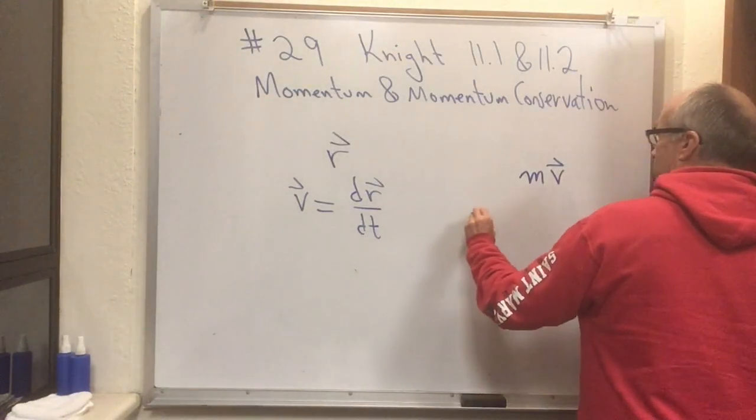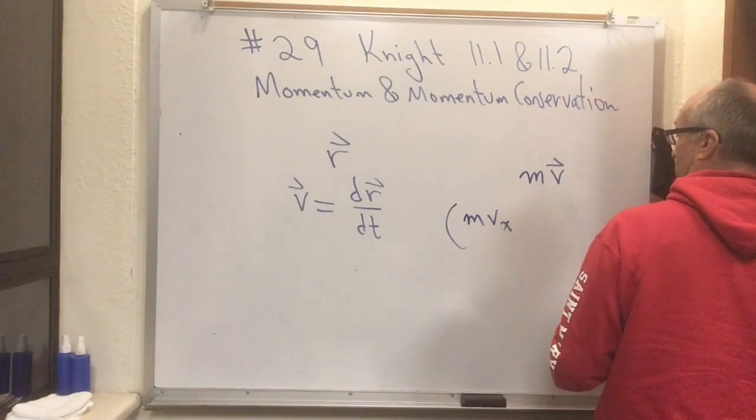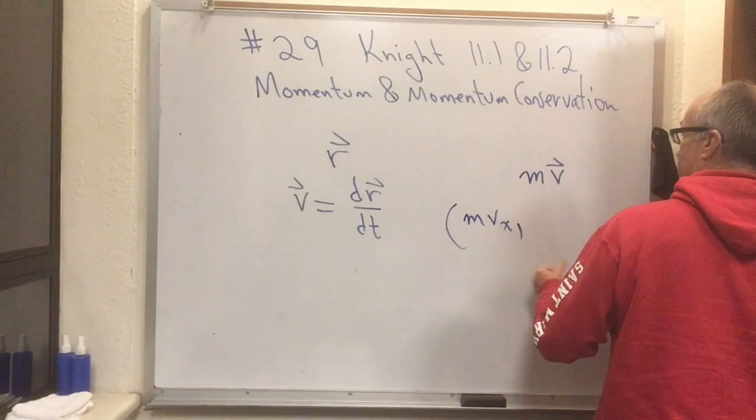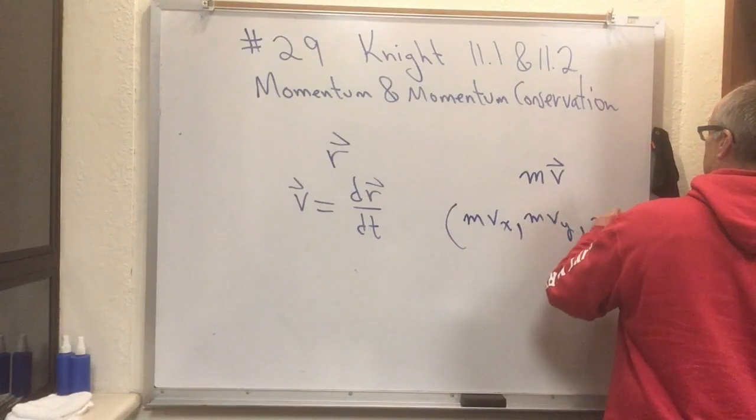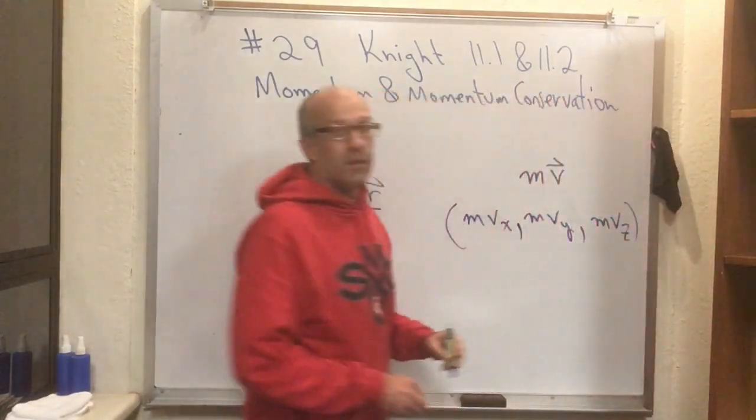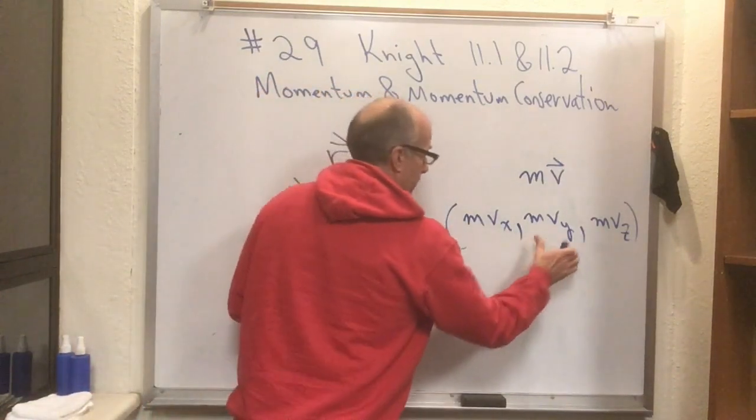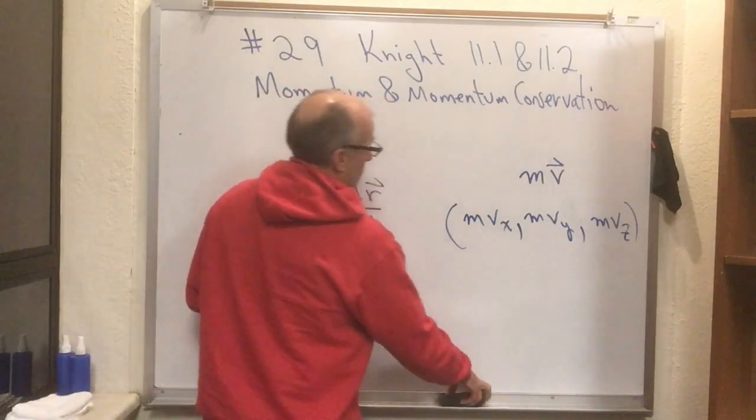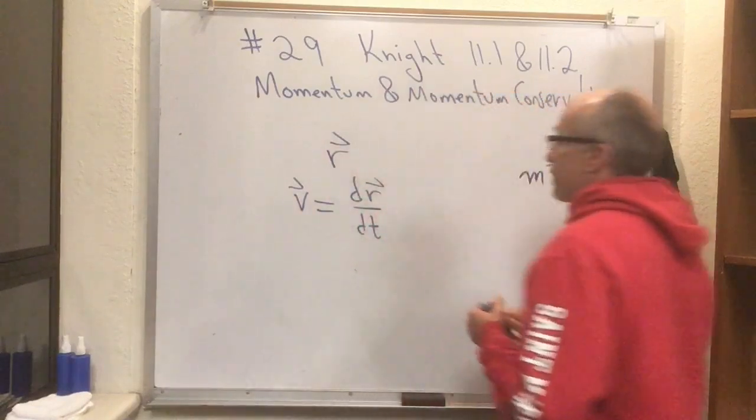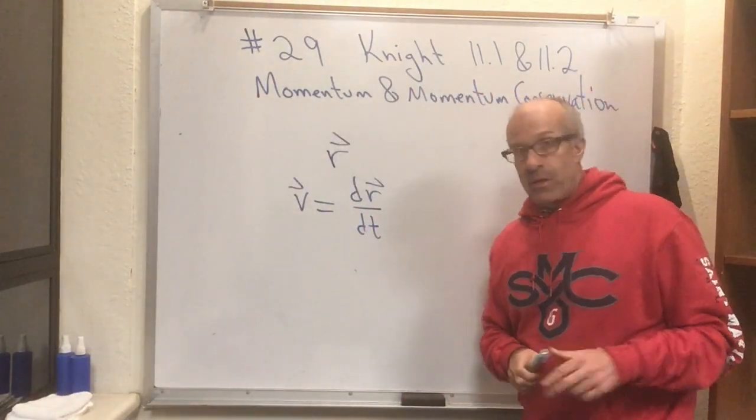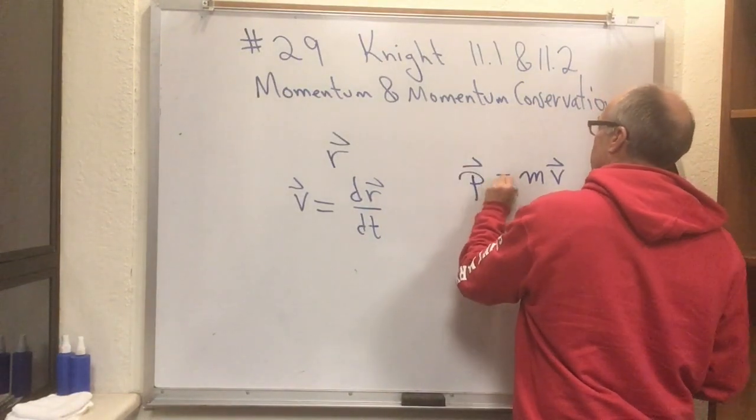Of course, it's got three components. The first component is m times the x component of the velocity. The second component is m times the y component of the velocity. And the third component is m times the z component of the velocity. And if you're in fewer than three dimensions, then it's just mvx, or mvx and mvy. We've got to give this thing a name. It's called the momentum, and the letter m has already been used. So we give it the name p. p equals mv.